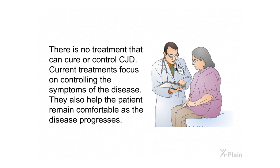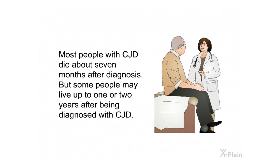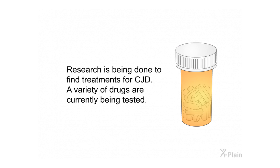There is no treatment that can cure or control CJD. Current treatments focus on controlling the symptoms of the disease and helping the patient remain comfortable as it progresses. Most people with CJD die about 7 months after diagnosis, though some may live up to 1 or 2 years. Research is being done to find treatments for CJD, and a variety of drugs are currently being tested.